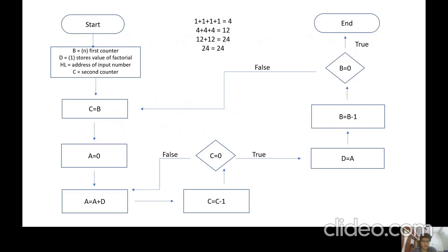In the 8085 simulator, we cannot directly multiply numbers — we can only add them. So as you can see at the top, this implementation will be performed using code in the simulator. First I will be adding one four times to get four, then adding three three times to get 12, then 12 added two times to give 24, and finally 24 added once to give 24.